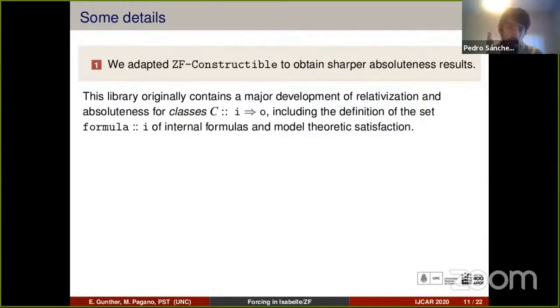For the first item, I will say brief words about the constructibility library. This contains a major development of relativization and absoluteness, but for class models, so collections of sets perhaps too big to be sets. The goal of this was to formalize Gödel's constructible universe. In order to do this, since the constructible universe has a model theoretic definition, this required the definition of the set of internal formulas and model theoretic satisfaction.